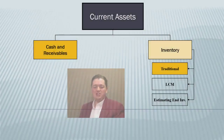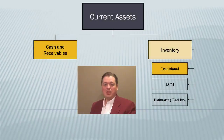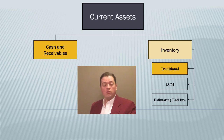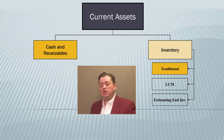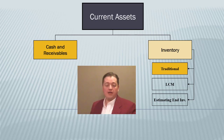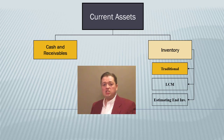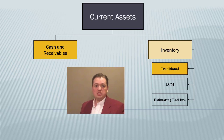Welcome back to our intermediate financial accounting class. In our last few segments we've been focused on inventory, reviewing the basics and adding a few fun twists to the basic calculations of our inventory values — LIFO, FIFO, Weighted Average, Dollar Value LIFO, etc. Now in addition to those basics, we also need to talk about some of the more advanced topics dealing with inventory.